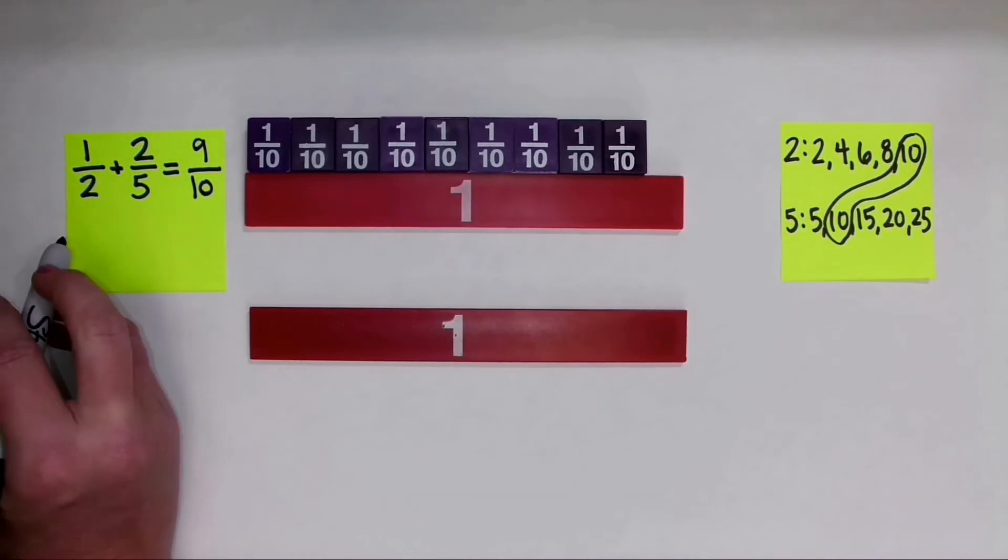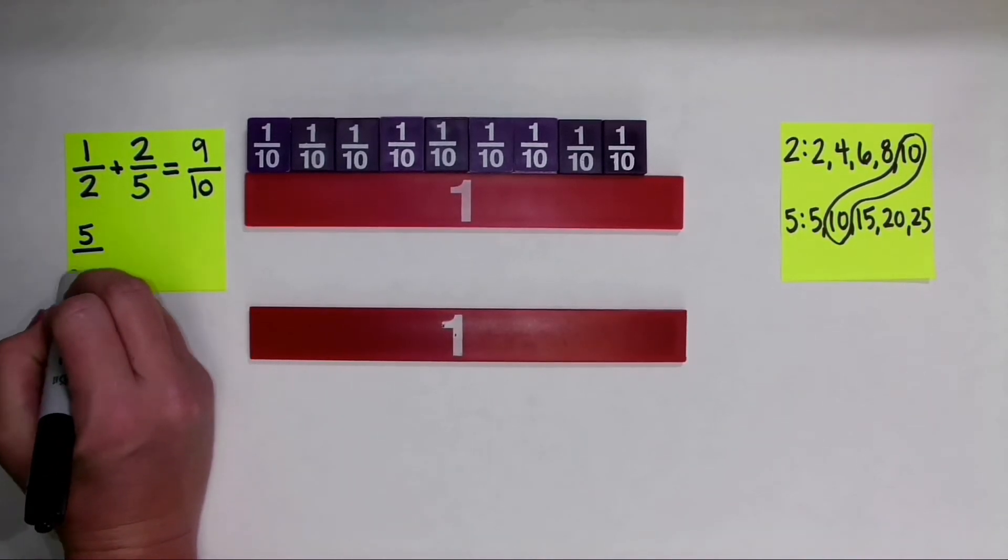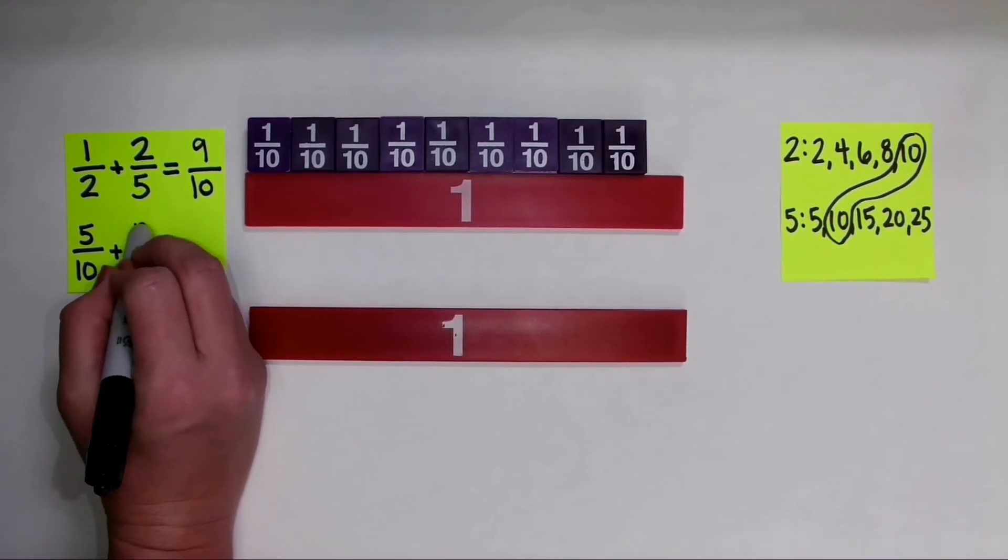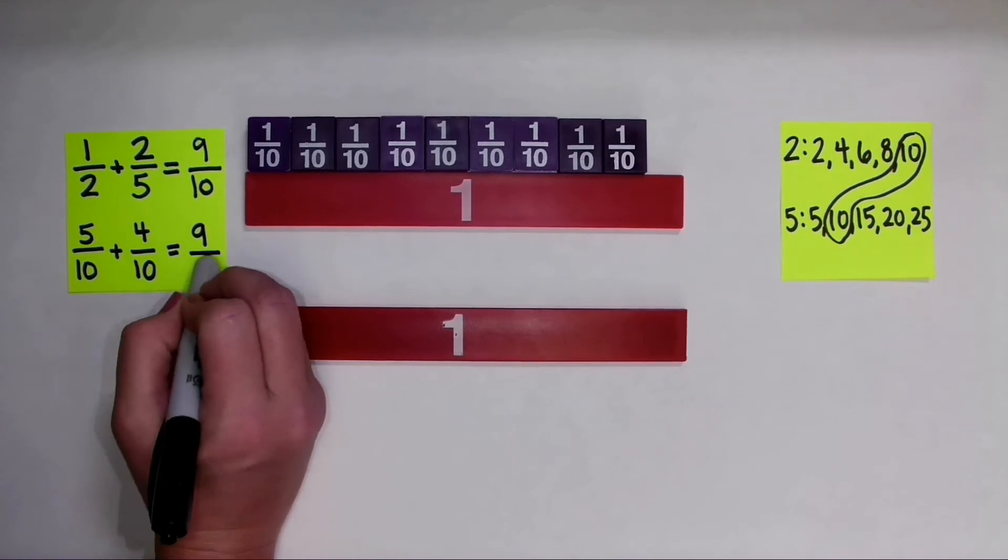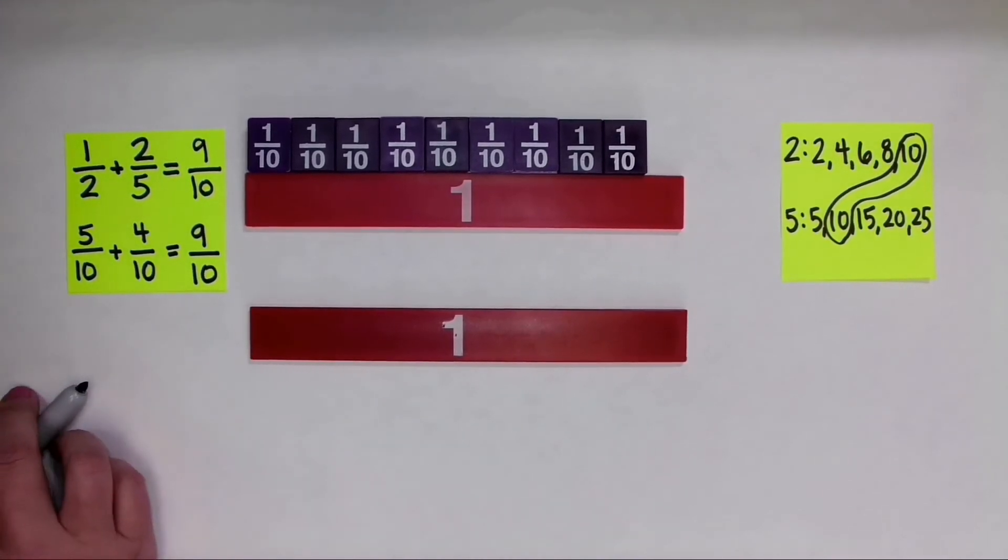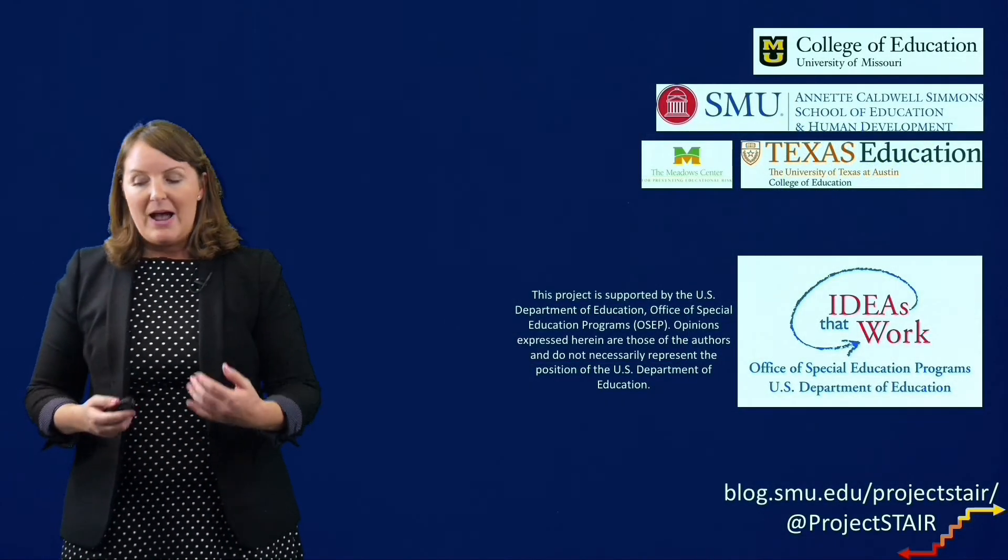Now for the students, if I did want to write this to show the common denominators, remember we added 5 tenths plus 4 tenths, and that is the same as 9 tenths. So that's one example of how we used the length model to add fractions.